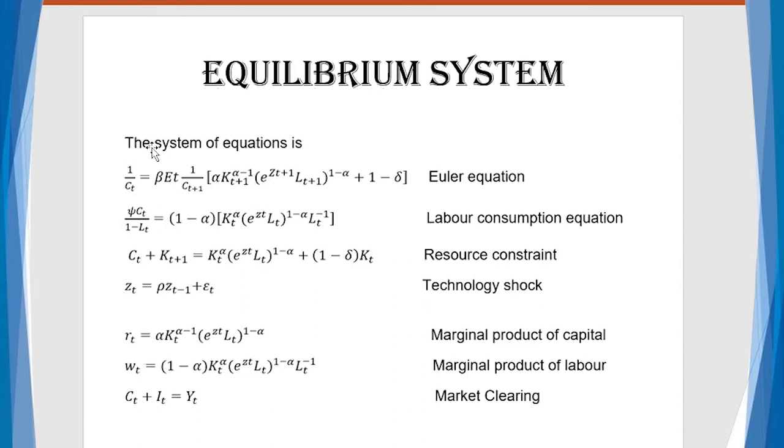And so the equations are as follows. From our optimization, the first one is the Euler equation. The second one is the labor consumption equation. And then the third one is the resource constraints. And then the next one is talking about technological shock that is an AR1 process. And then you have the marginal product of capital that's written this way. And then the marginal product of labor. The last equation is the market clearing condition.